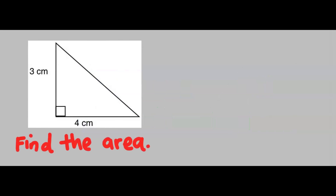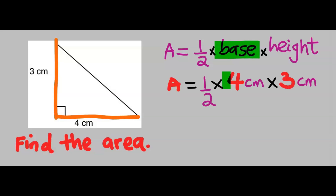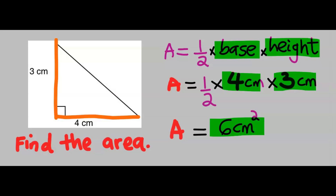Next, we are going to find the area of this triangle. Here we have a given base and also a given height. Step 1: write out the formula that the area of a triangle is half base times the perpendicular height. Next, we are going to substitute for the base and also for the height. And our answer is 6 cm squared.